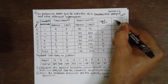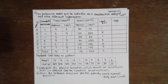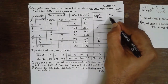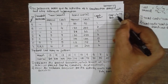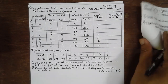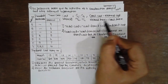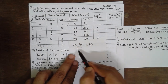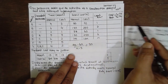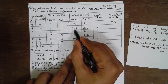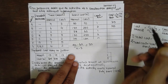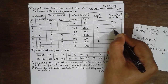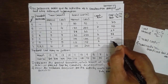Now for the cost slope. The formula is: (Cc minus Cn) divided by (Tn minus Tc) — that means crash cost minus normal cost divided by normal time minus crash time. For example: (90 minus 60) divided by (4 minus 3) = 30. Next: (250 minus 150) divided by (6 minus 4) = 50. The remaining rows follow the same procedure: 22, 50, dash, 30, 70.